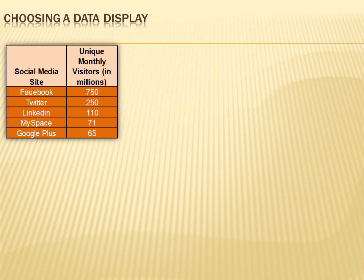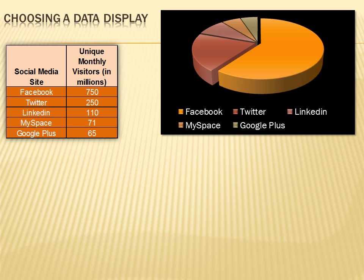You remember that in the last example, a pie chart didn't work very well. Let's see what a pie chart does with this data. I think it works a lot better — you can quickly see that Facebook is the big one, Twitter is considerably smaller, and the other three are much less. I think one of the reasons is we've only got five categories here. With a limited number of categories, a pie chart works pretty well.